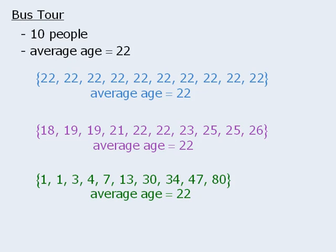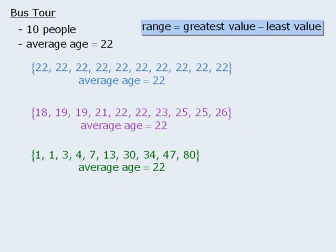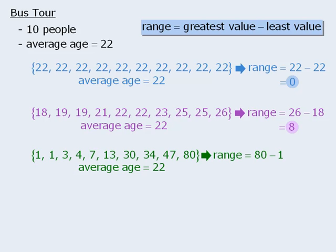Knowing only the average age does not necessarily give us a clear picture of the population. Another useful piece of information would be to know how dispersed the numbers are. One way to measure this is to use the range, which is equal to the largest number in the set minus the smallest number. For the first set, the range equals 22 minus 22, which is 0. For the second set, the range equals 26 minus 18, which is 8. And for the last set, the range equals 80 minus 1, which is 79. So knowing the average value and the range gives us a better idea of how a certain population looks.